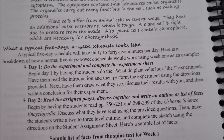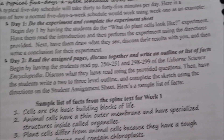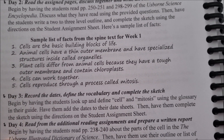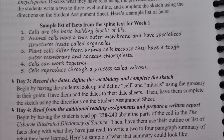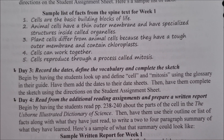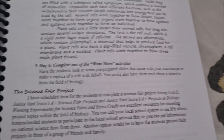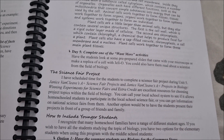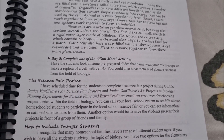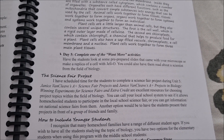For a five-day schedule: day one you do the experiment and complete the experiment sheet; day two you read assigned pages, discuss, and write an outline; day three you recall dates, define vocabulary, and complete the sketch; day four you read from additional reading assignments and prepare a written report; day five you do one of the 'want more' activities. She also talks about the science fair project you can do in unit five, which sounds really fun.